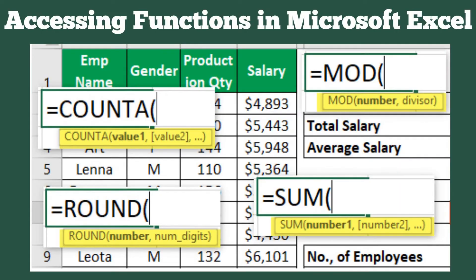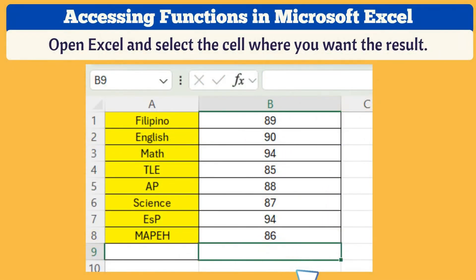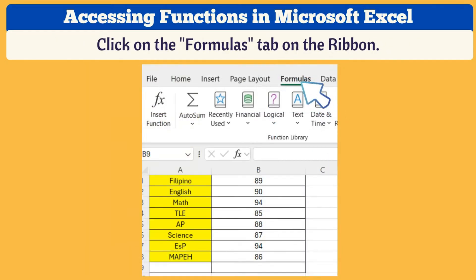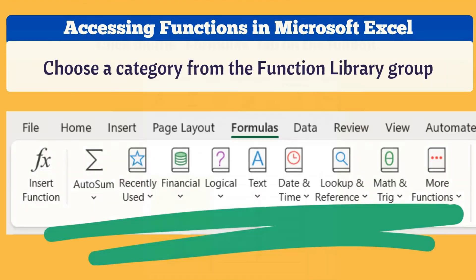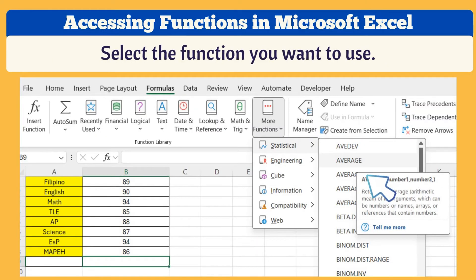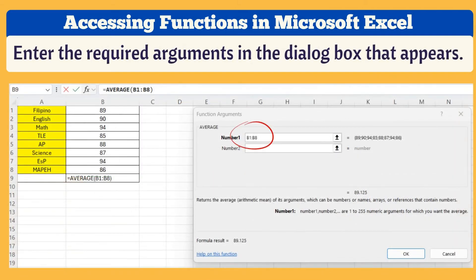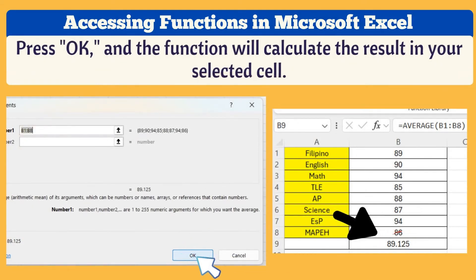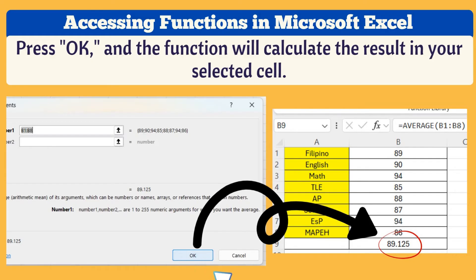Let us talk about the steps in accessing functions in Microsoft Excel. First, open Excel and select the cell where you want the result. Next, click on the Formulas tab on the ribbon. Then choose a category from the function library group — we have Financial, Lookup and Reference, Math and Trig, and others. After that, select the function you want to use, enter the required arguments in the dialog box that appears, press OK, and the function will calculate the result in your selected cell.